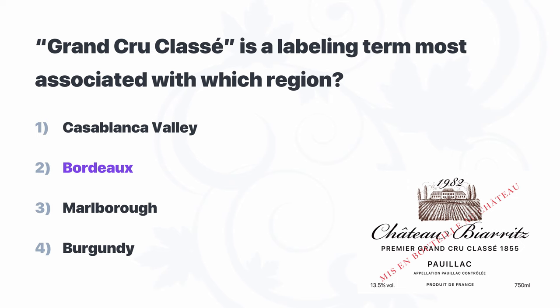That leaves Bordeaux and Burgundy, and we need to remember the Grand Cru system in both regions. In Burgundy, Premier Cru and Grand Cru titles are assigned to vineyards, but in Bordeaux that status is applied to producers by several classification systems set up in several of Bordeaux's sub-regions. So that Classé element tells us this is Bordeaux — you can think of classification, Classé, as a way to remember that.